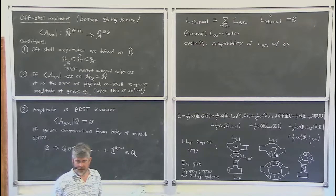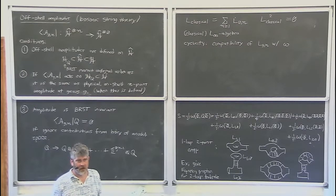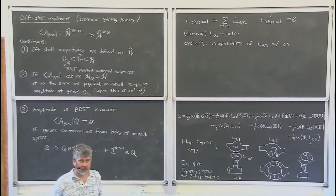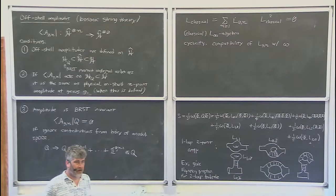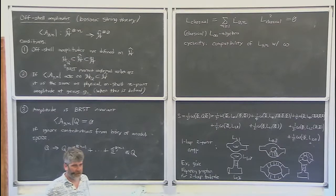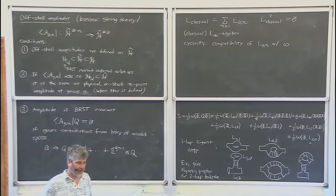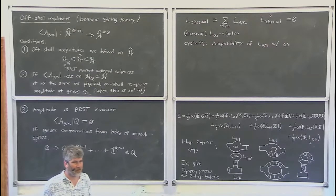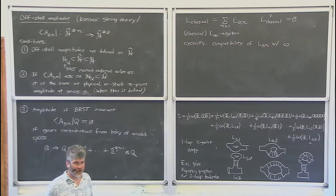The problem we will discuss next time is that you need to specify a conformal frame for inserting the operator at the puncture. This off-shell amplitude will allow you to compute scattering of states which are not conformal vertex operators — including states in the BRST cohomology that are not conformally invariant. Without doing something like what will be described next time, you simply don't know what to do in the standard worldsheet prescription when you don't have a conformal vertex operator.